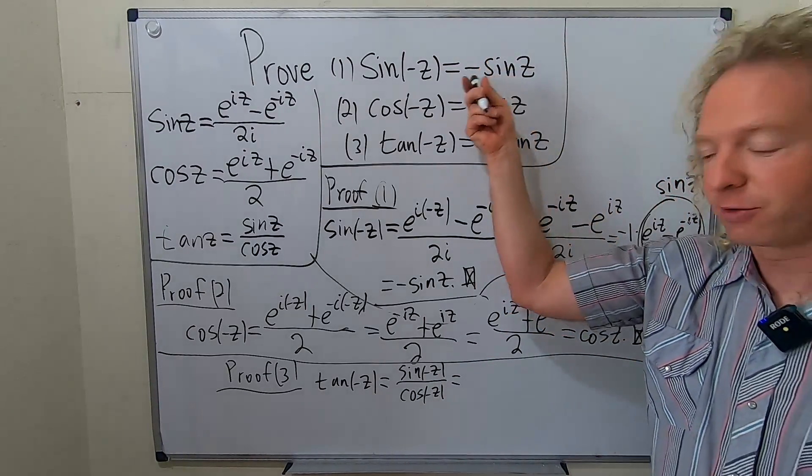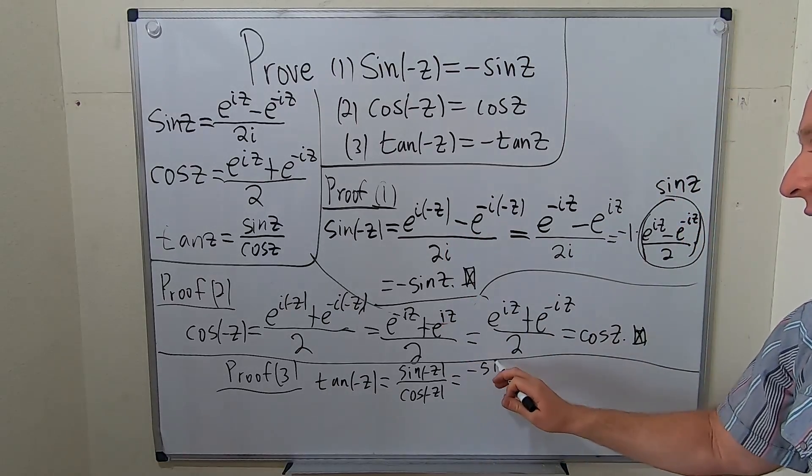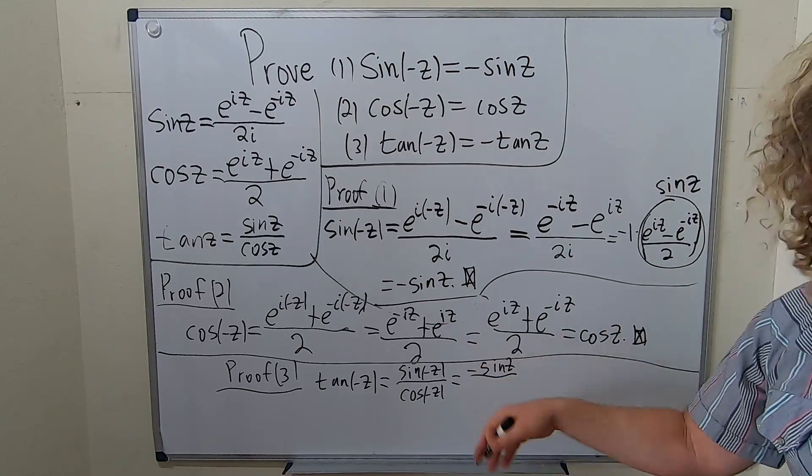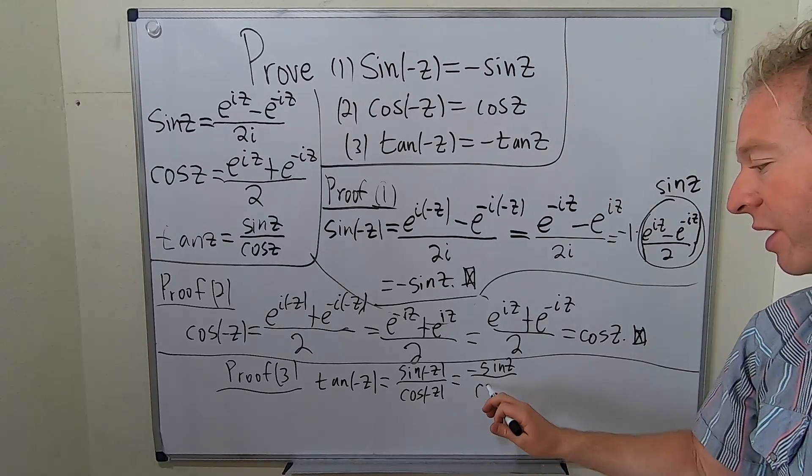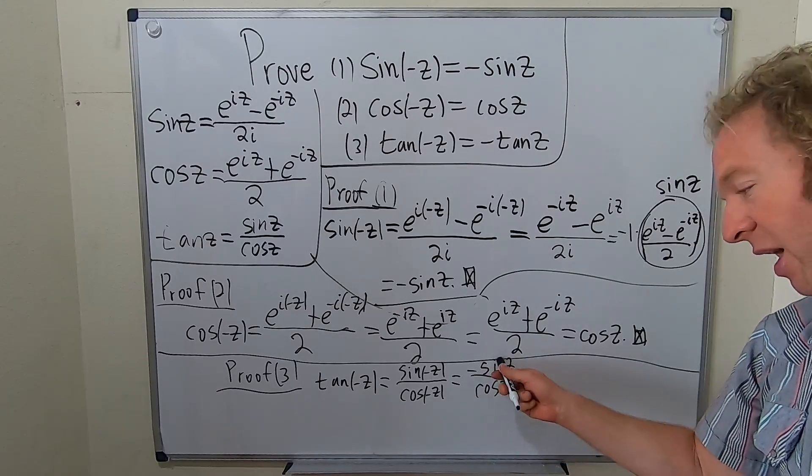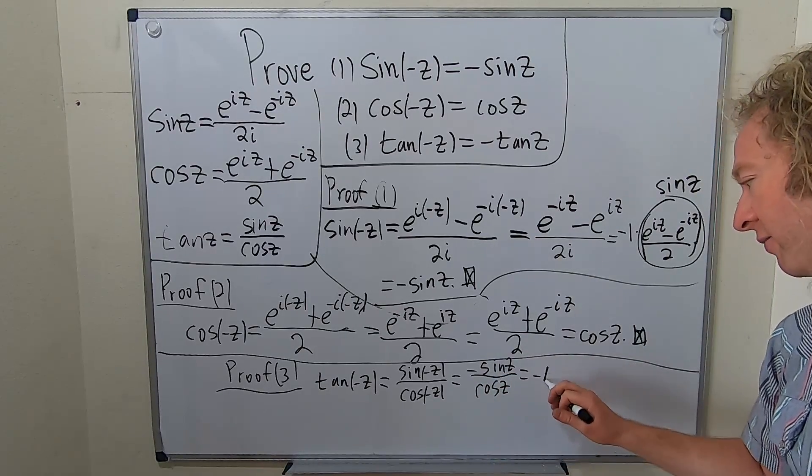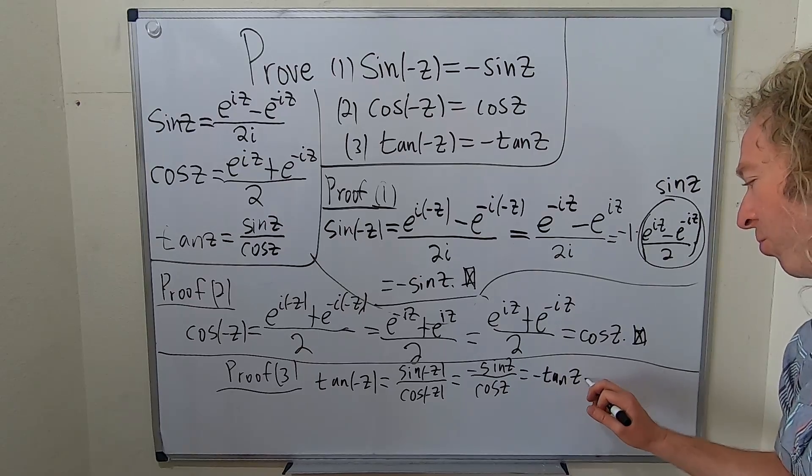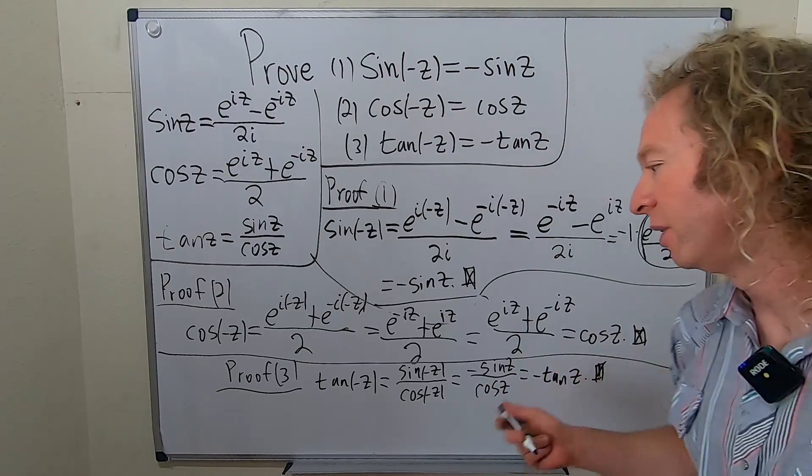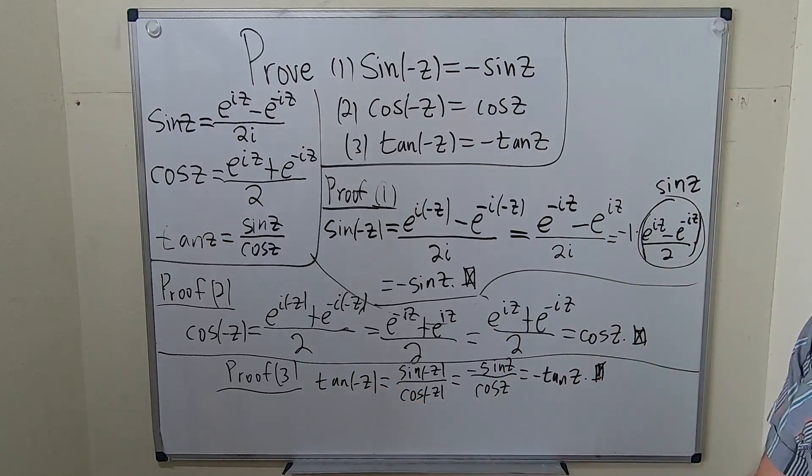Sine is odd. That's what we proved a minute ago. So this is negative sine z. Cosine is even. So it eats negative signs. We just proved that a minute ago. So this is cosine z. So we get negative sine over cosine. We get negative tangent. So this proves that the tangent function is odd. Boom. That's how pros do it.